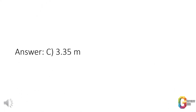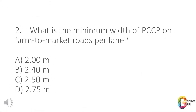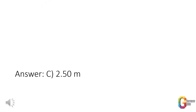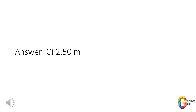Question 2. What is the minimum width of PCCP on farm-to-market roads per lane? a. 2 meters. b. 2.4 meters. c. 2.5 meters. d. 2.75 meters. Answer: c. 2.5 meters.